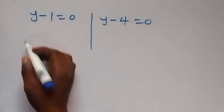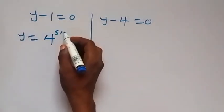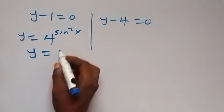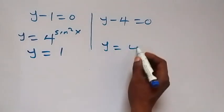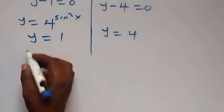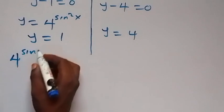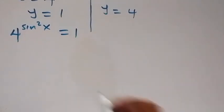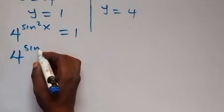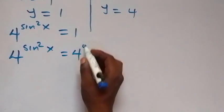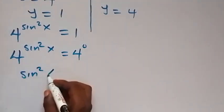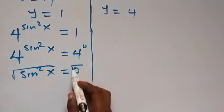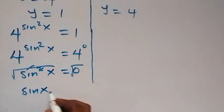Recall that y equals 4 raised to the power sine squared x. From y minus 1 equals 0, we get y equals 1, and from y minus 4 equals 0, we get y equals 4. For y equals 1: 4 raised to sine squared x equals 1, which equals 4 raised to 0, so sine squared x equals 0. Taking the square root of both sides, sine x equals 0.